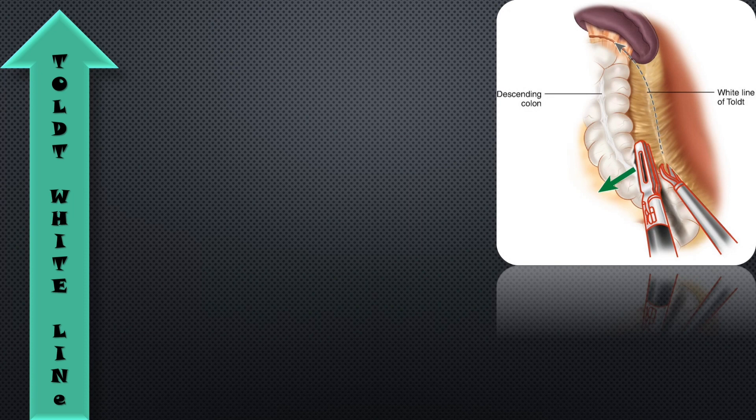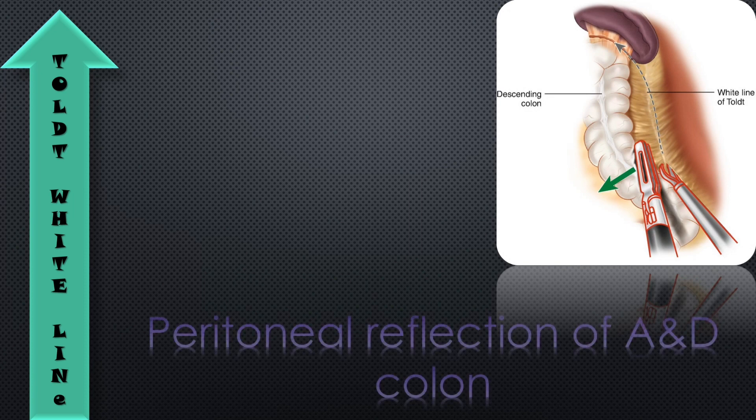The next sign is Told white lines. The lines represented in this picture are Told white lines — that is nothing but the peritoneal reflections of the ascending and descending colon.